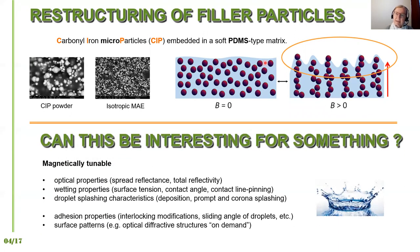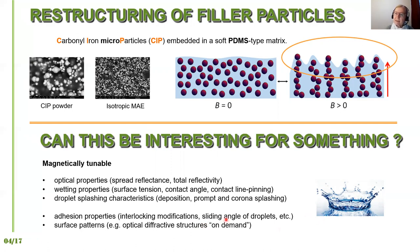What is interesting about being able to change the surface with a magnetic field? This can be used to tune optical properties such as reflectivity, or to tune wetting properties for different liquids — such as contact angle, surface tension, and contact line pinning. We will also show that droplet splashing characteristics can be tuned — for instance, corona splashing versus normal deposition of a droplet. We also believe adhesion properties are strongly modified with magnetic field, and surface patterns can be formed and changed by magnetic field, so there is still a lot of playground in this field.